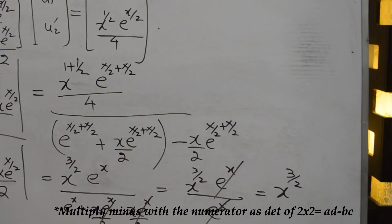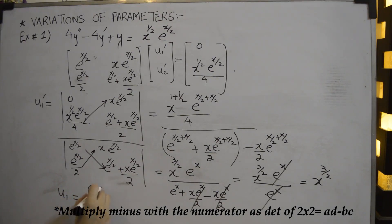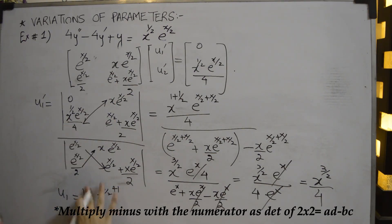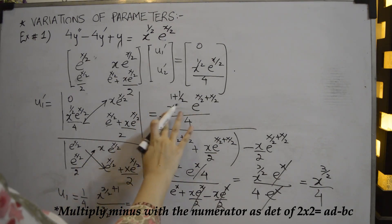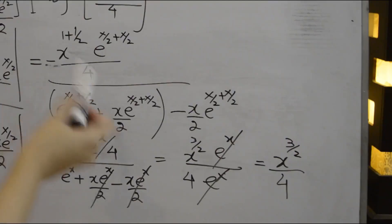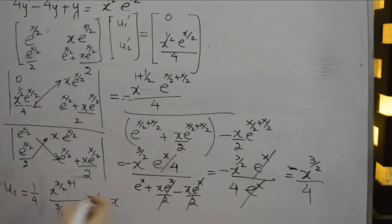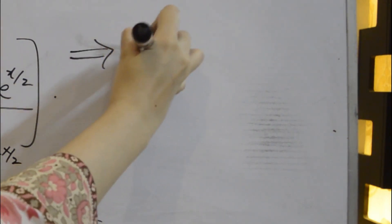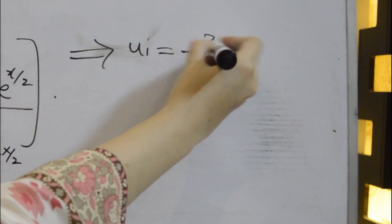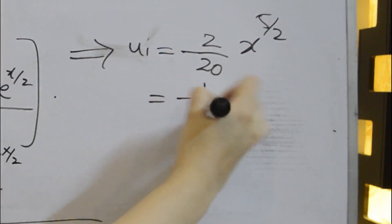Taking the integral of u1', u1 = integral of x^(3/2). One more thing: there is a missing negative sign because of how b and c are multiplied, so there is a minus sign. Using the power rule: x^(3/2+1) / (5/2) = x^(5/2) / (5/2). Cross-multiplying gives -2/10, so u1 = -1/10 * x^(5/2).